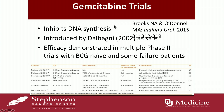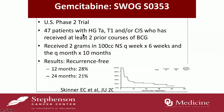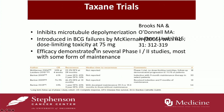Gemcitabine inhibits DNA synthesis and was first reported as safe in phase one trials in 2002. The SWAB phase two trial looked at 47 patients with high-risk cancer who had received at least two courses of BCG. Patients received 2 grams of gemcitabine in 100 cc's for six weeks as induction, then monthly for one year. Recurrence-free survival was about 28 percent, and somewhat less at 24 months — again, not a home run.